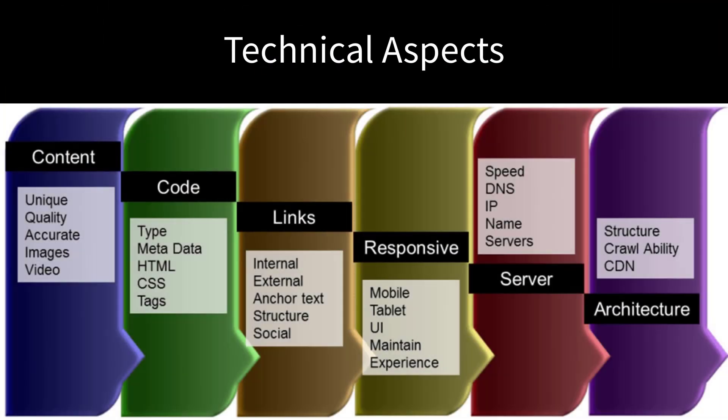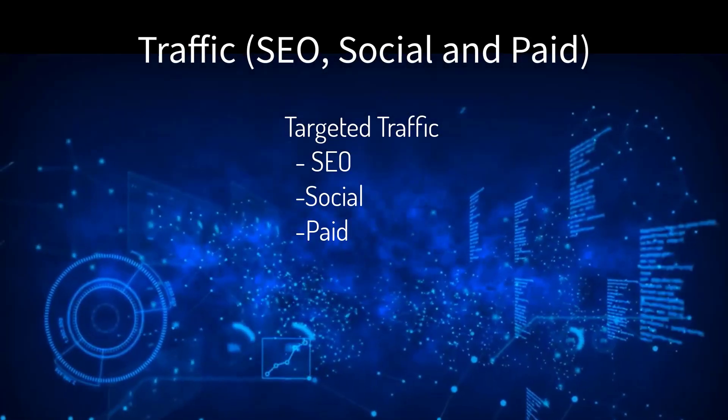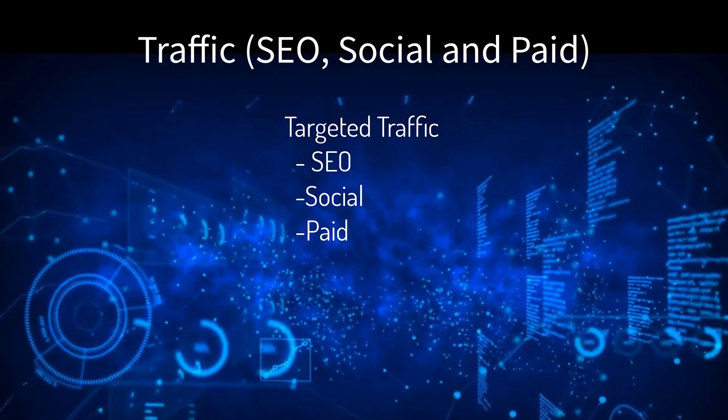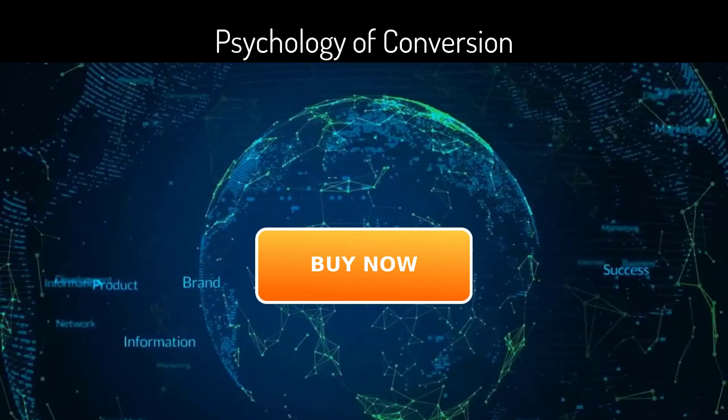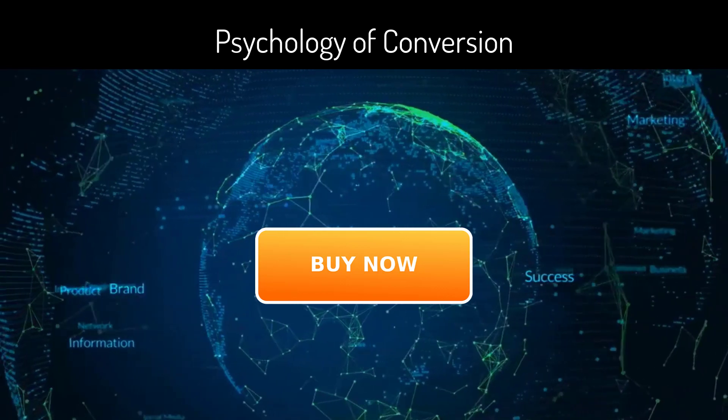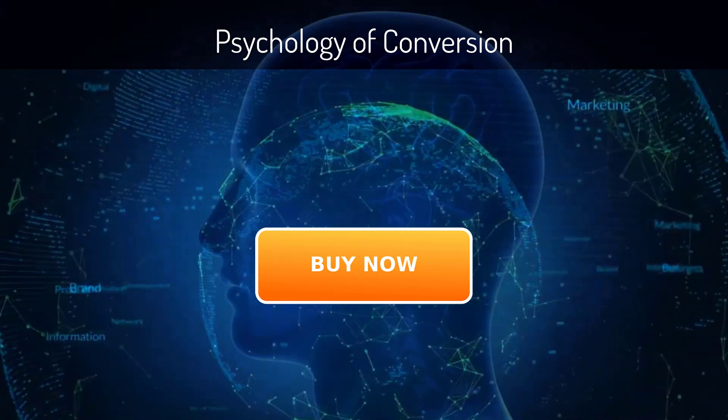Of course, all online marketing must have three elements in alignment: the technical aspects — servers, layout, code structure; the traffic — SEO, social, and paid; and the psychology of conversions.